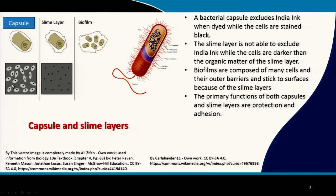Against a dark background, you can see the cells as very dark. The capsule is lighter in color and the other part of the background is very dark compared to the capsule part. That is how you can visualize the fact that there is a capsule around certain types of cells.